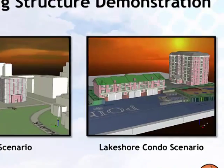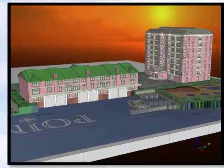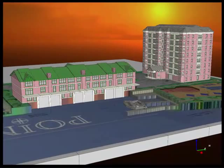In the second example, we'll use detailed floor plans to construct a relatively complex lakeshore scene including an eight-story condominium building, a three-level townhouse building, and a small marina.